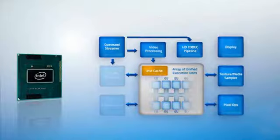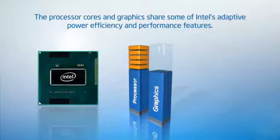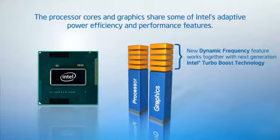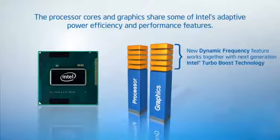The processor cores and graphics share some of Intel's adaptive power efficiency and performance features. For example, the graphics includes a new dynamic frequency feature that works together with next-generation Intel Turbo Boost technology.